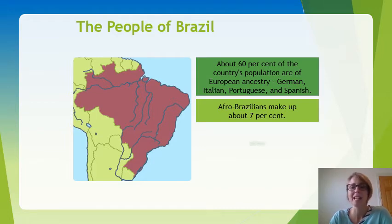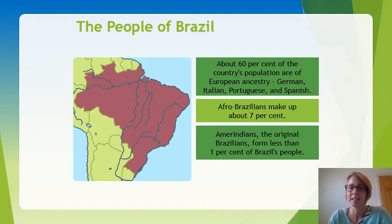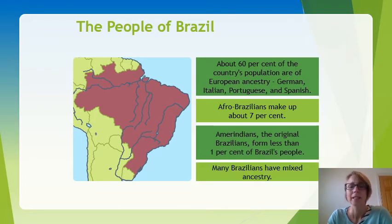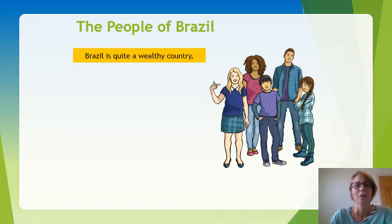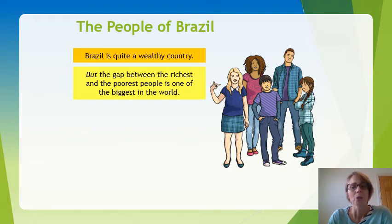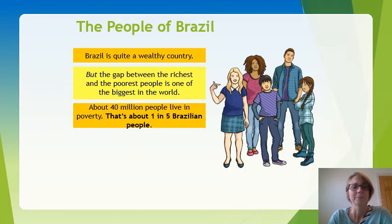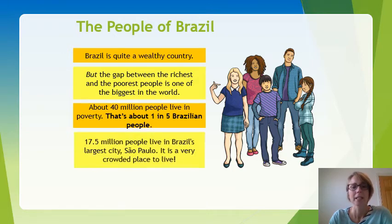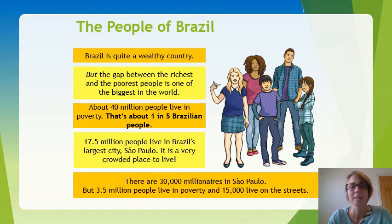Afro-Brazilians make up about seven percent, and Amerindians — the original Brazilians — form less than one percent of Brazil's people today, which seems quite surprising. Many Brazilians have mixed ancestry. Brazil is a wealthy country, but the gap between richest and poorest is one of the biggest in the world — about 40 million people, one in five Brazilians, live in poverty. In São Paulo, with 17.5 million people, there are 30,000 millionaires but also 3.5 million living in poverty and 15,000 on the streets.